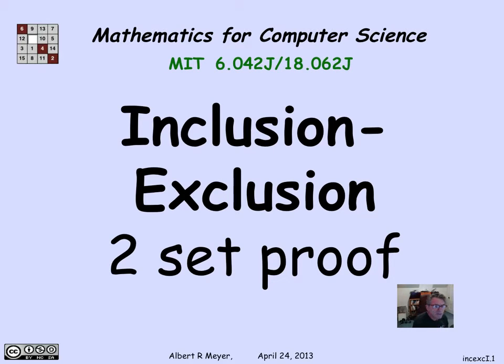The arguments that we just reviewed for proving inclusion-exclusion by looking at how many times points are counted can be made perfectly rigorous. In fact, we'll do that in a later segment. But it's interesting and good practice to realize that they can also be proved just from some simple set theoretic identities using the ordinary disjoint sum rule.